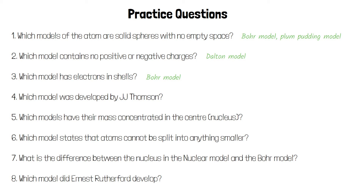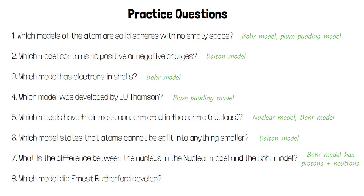The model that was developed by JJ Thompson was the Plum Pudding model. The models that have their mass concentrated in the centre in a nucleus are the nuclear model and the Bohr model. The only model that states that atoms cannot be split into anything smaller was the Dalton model. The nucleus in the nuclear model and the Bohr model is different because the Bohr model has protons and neutrons whereas the nuclear model doesn't have them — it's just a positive area.